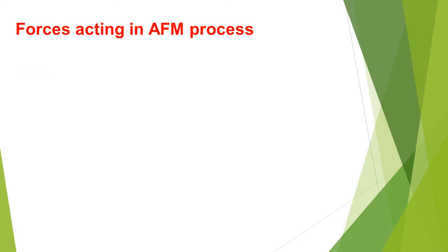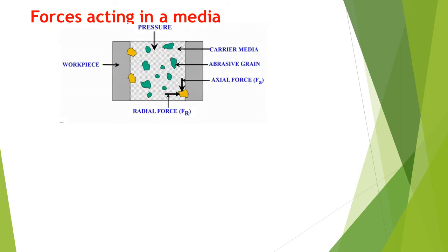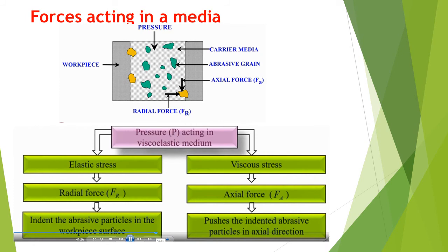Forces acting in the AFM process: there is a shear force acting tangentially to the workpiece, which is activated into two components — axial force and radial force. The abrasive moves in the axial direction along the soft polymer, and these abrasive particles remove material from the surface. The pressure in the viscoelastic medium creates elastic stress, then radial force, which indents the abrasive particles into the workpiece surface. Viscous stress creates the axial force, which pushes the indented abrasive particles in the axial direction.